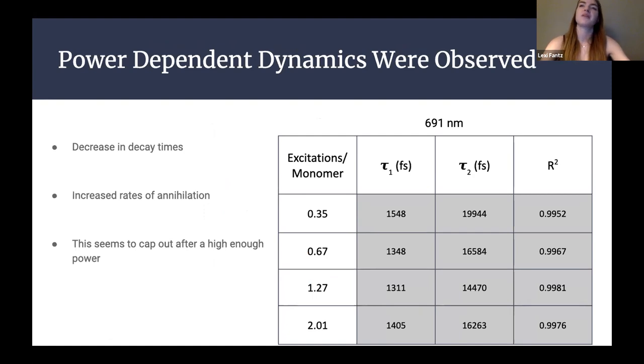We definitely observed a decrease in decay times as the powers were increased and this is due to the fact that at higher powers there are more excitations per monomer which in turn leads to higher rates of annihilation. Because this is a bi-exponential we have two distinct time scales which could represent two different decay pathways such as annihilation and fluorescence. At 691 nanometers we see the same trend in both of these time constants where it decreases as the number of excitations per monomer increases up to 1.27 excitations per monomer. However we actually see an increase in the decay time just over two excitations per monomer and we don't know exactly why that is yet. One potential explanation for this is that there is a cap after which the annihilation is occurring at a high enough rate that increasing the excitation doesn't really do anything to the system anymore without photobleaching it, or perhaps there's some system in place to combat high light conditions and somehow slows down those times. Ultimately we would need to look at more annihilation simulations to determine this.